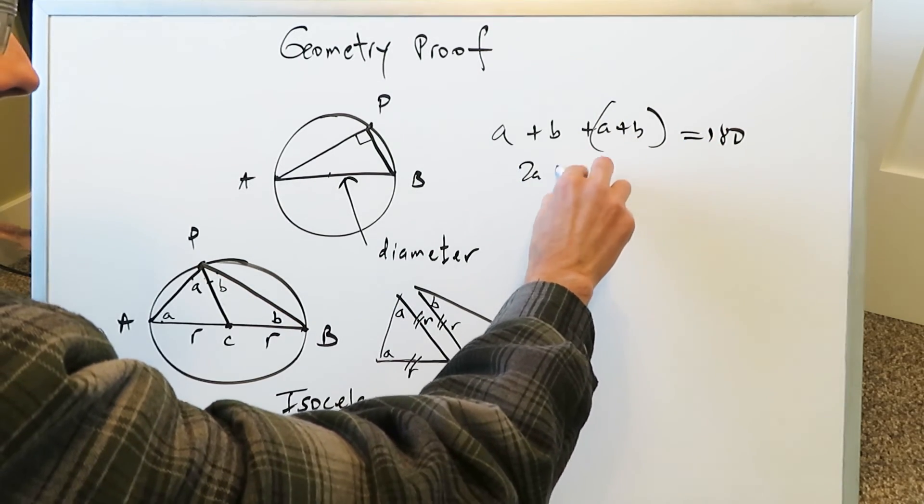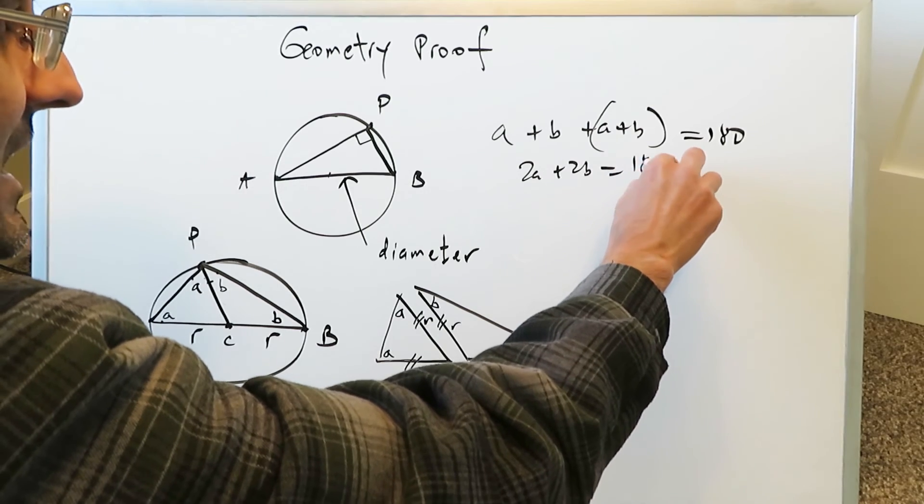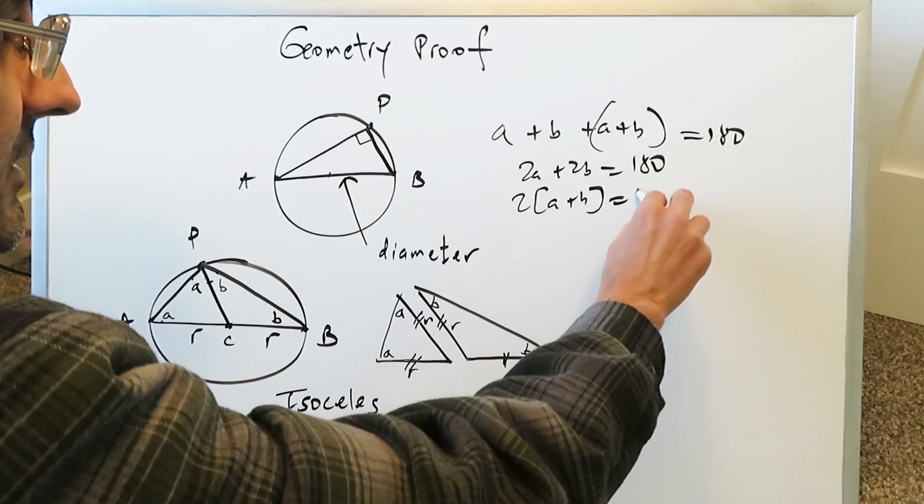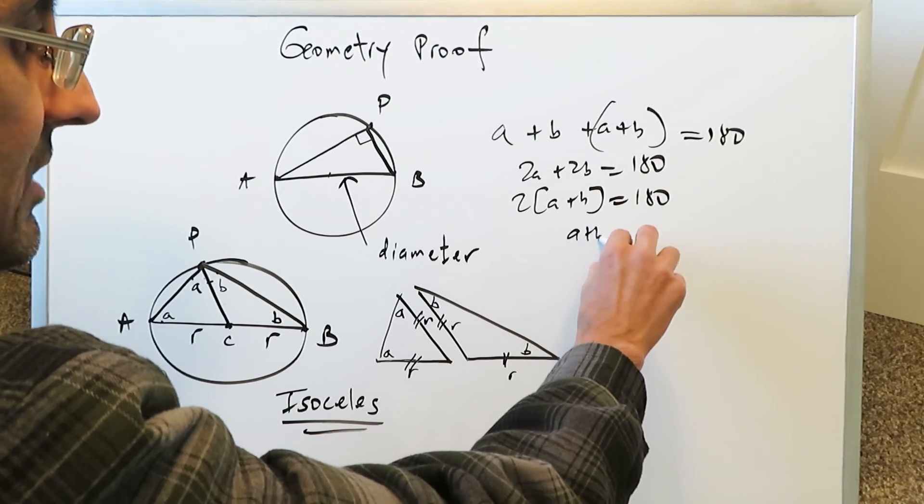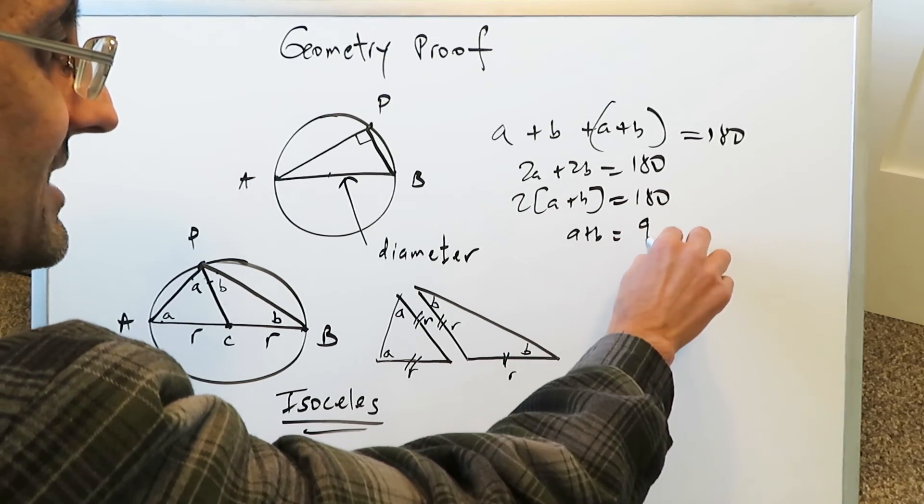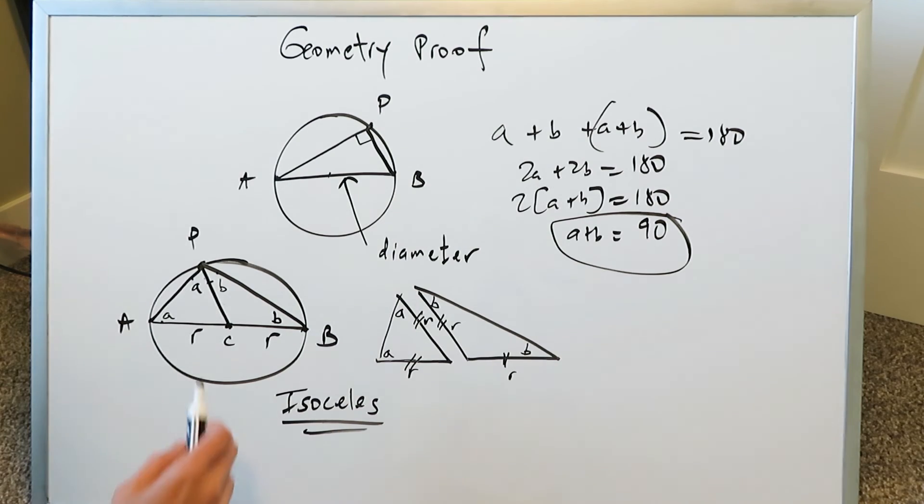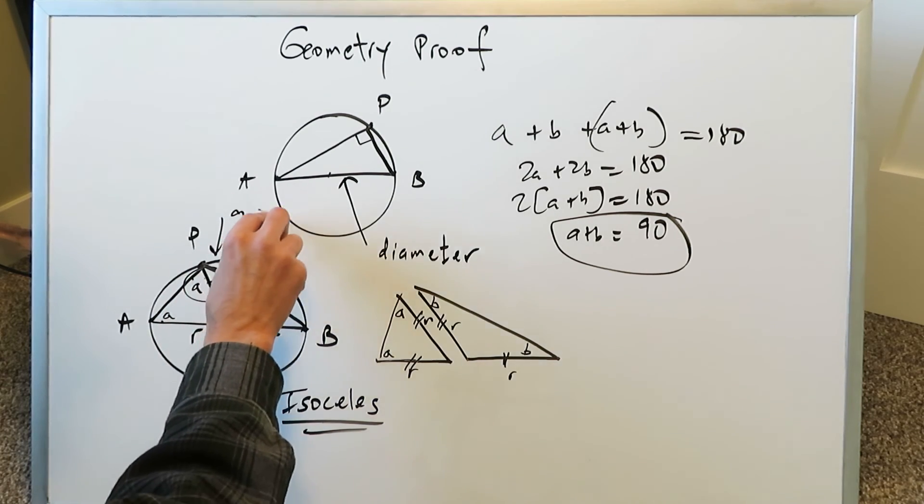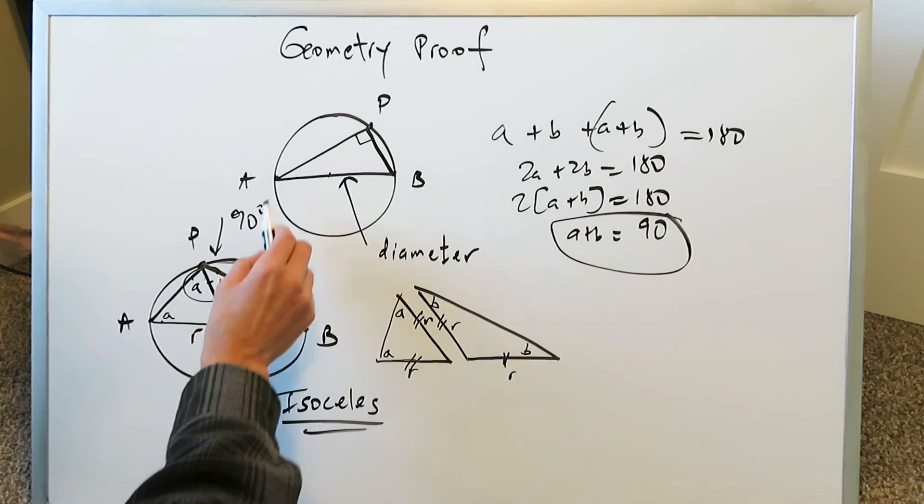Add them up. You have 2A plus 2B is equal to 180. Isolate 2. You have A plus B with the 2 brought out is equal to 180. And then you have A plus B is equal to 180 divided by 2, which is 90. So wherever I'm seeing a combination of A plus B, as I'm seeing right over here, then that right there must be 90 degrees. And we've proven this to be the case.